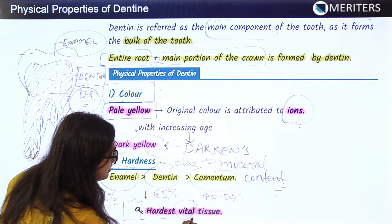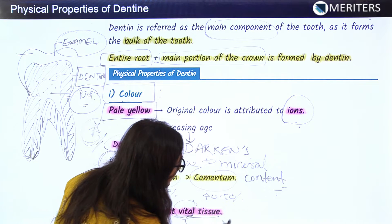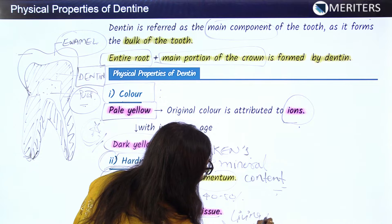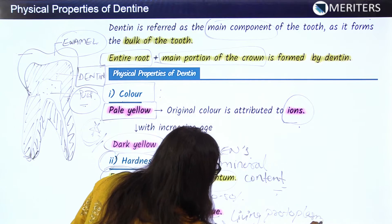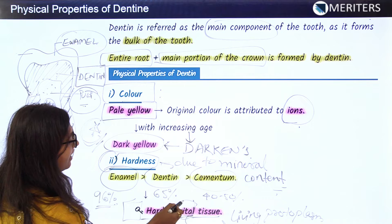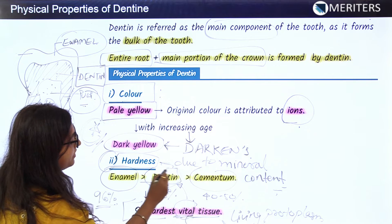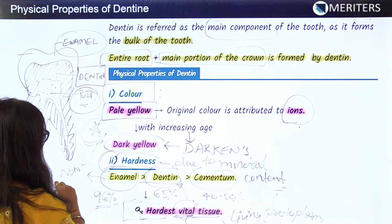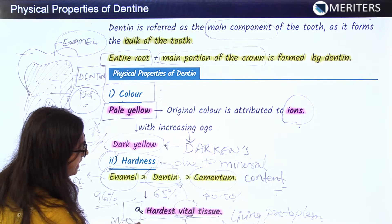A key fact to note: if the question asks for the hardest vital tissue, the answer will be dentine. Vital means it contains living protoplasm. Dentine is a living, vital structure, whereas enamel is a non-vital tissue. So the hardest vital tissue is dentine — this is very important for exams.